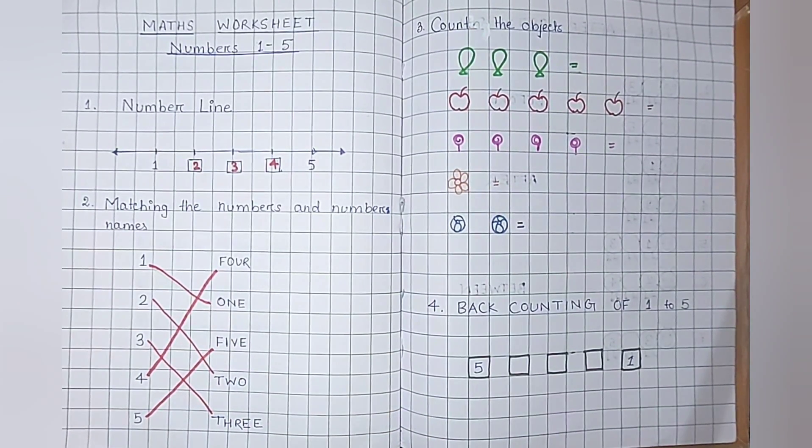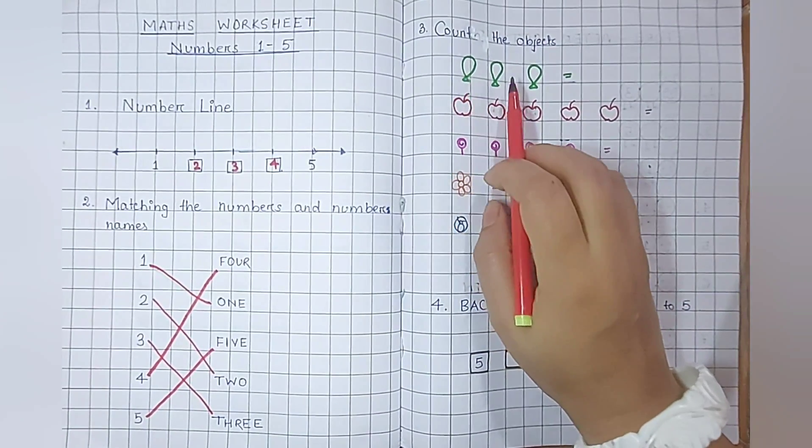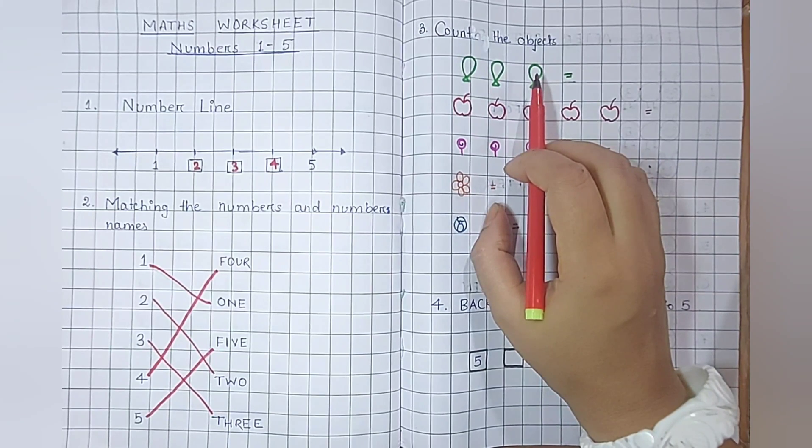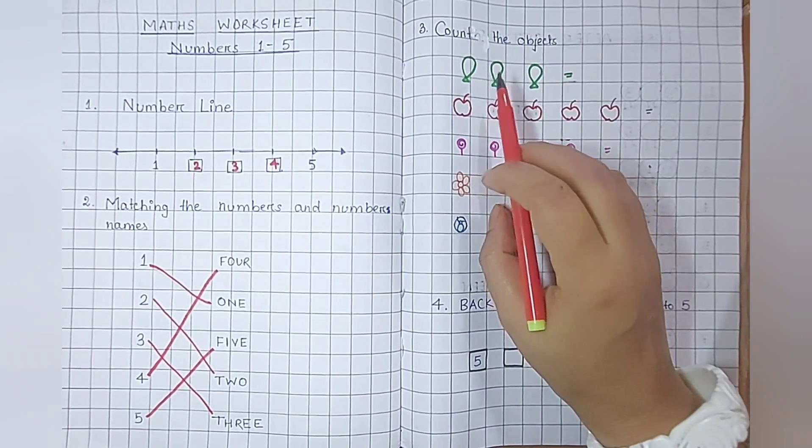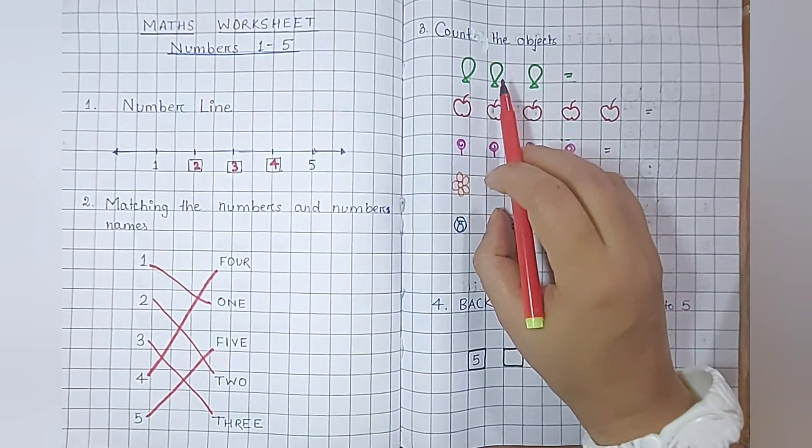Count the object. First one balloon, two balloons, and three balloons. It helps the student to count the object learning. One, two, three.